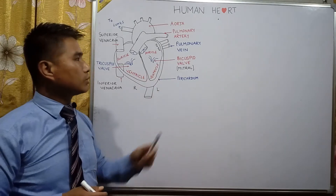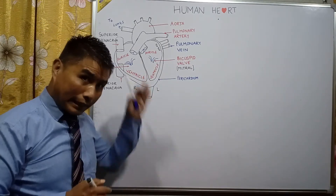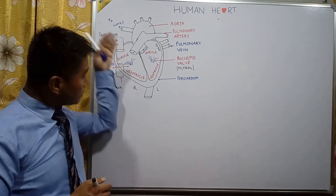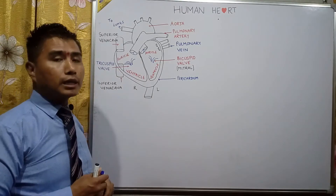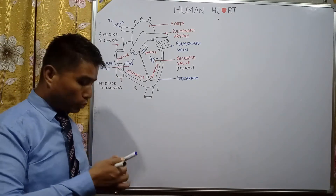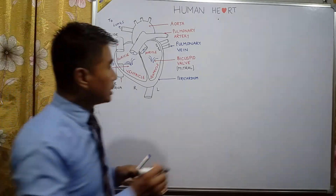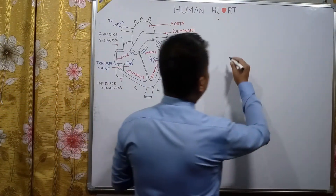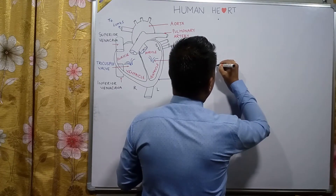The covering of the human heart is known as the pericardium. Let me explain the same diagram of the human heart in a simpler way.